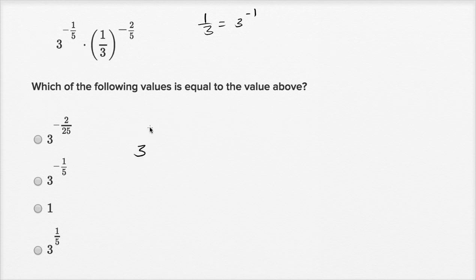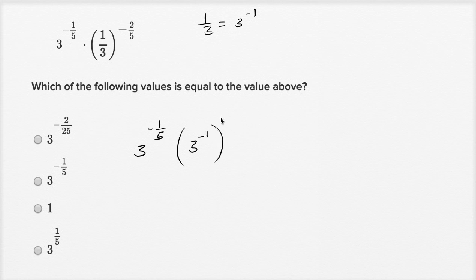So it's going to be three to the negative one-fifth times, instead of writing one-third, I could write three to the negative one power to the negative two-fifths power. And now we can just use our straight exponent rules to simplify things a little bit.